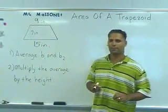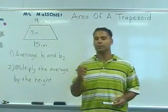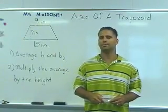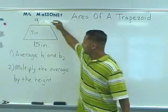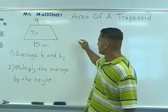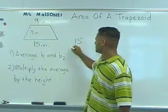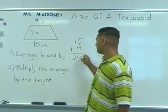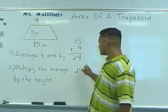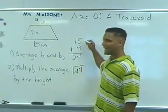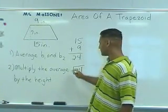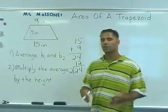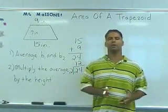Now when finding the area of a trapezoid, what you do is you take the two bases, b sub 1 and b sub 2, and you simply find the average of those two numbers. So let's begin. Let's take 9 and 15, or b sub 1 and b sub 2, and add them together. 15 plus 9 gives us a sum of 24. And then we take 24 and divide by the number of addends, which gives us 12. So the average of the two bases is 12 inches.